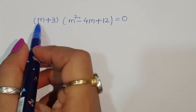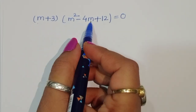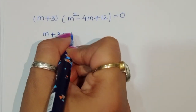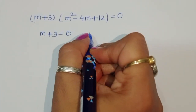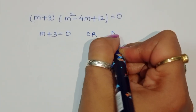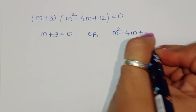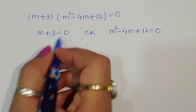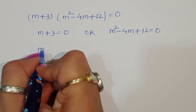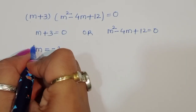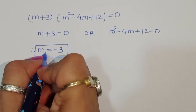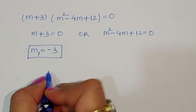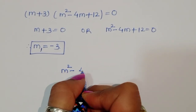We now have two equations: m plus 3 equals 0, and m squared minus 4m plus 12 equals 0. From the first equation, m plus 3 equals 0, therefore m equals minus 3. This is the first value, m₁ equals minus 3.